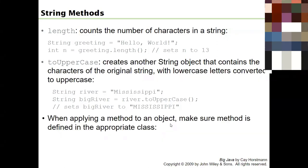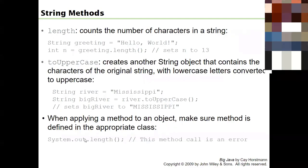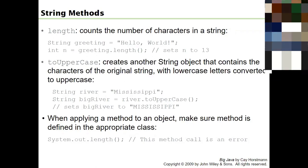When applying a method to an object, make sure the method is defined in the appropriate class. If you say System.out.length(), that's wrong - length belongs to the String class, and System.out is a PrintStream which doesn't have a length method. The compiler will say you're trying to call a method on an object that doesn't have that method defined. This would create a compiler error.